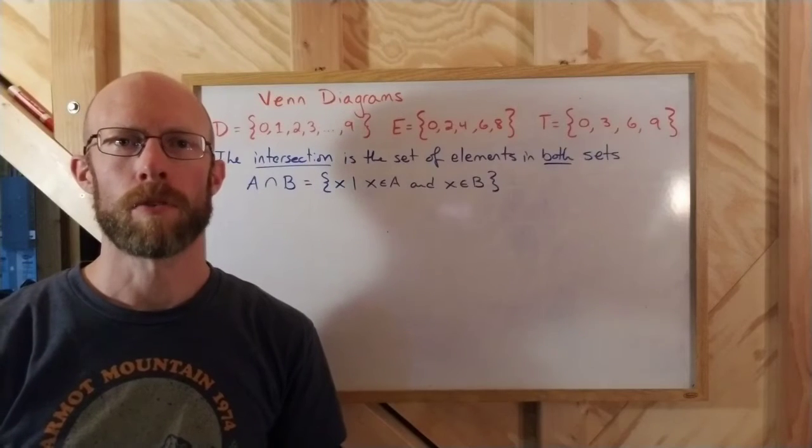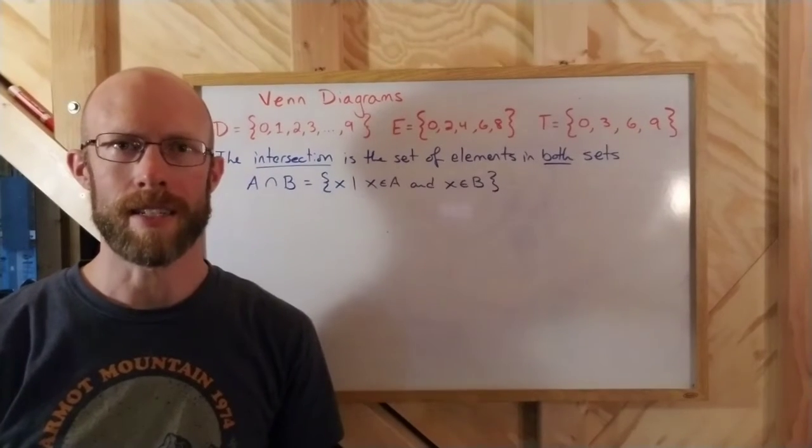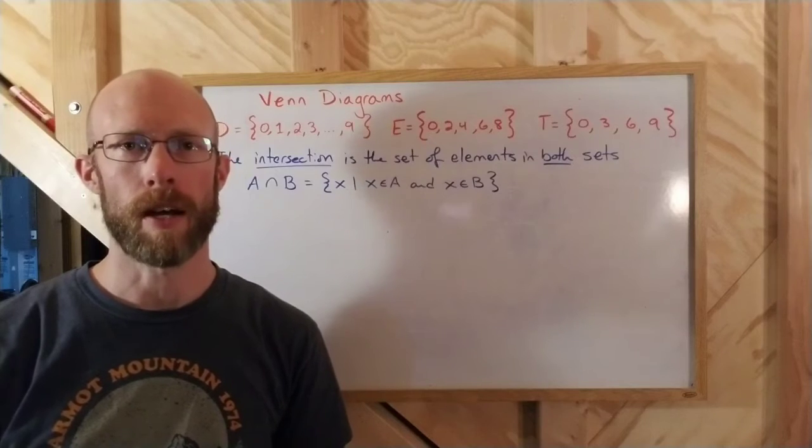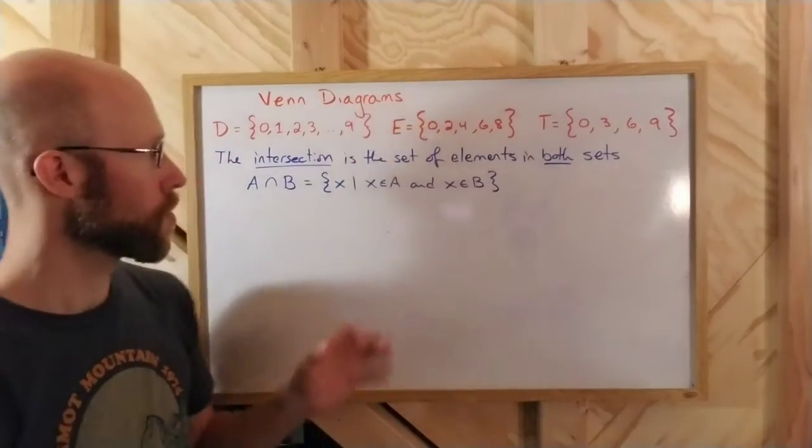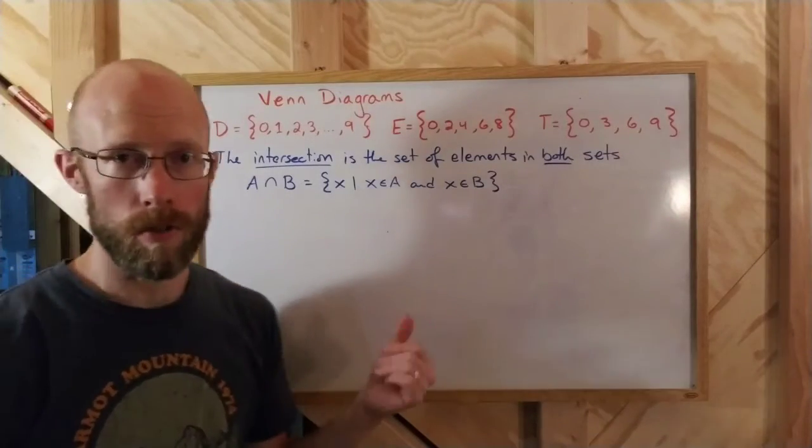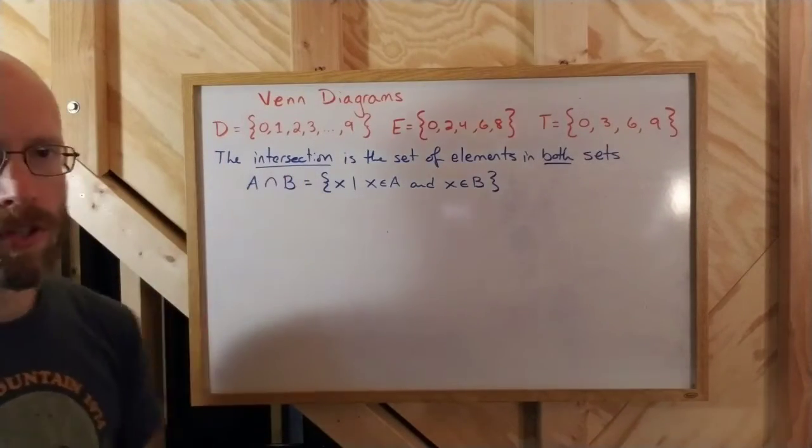And so now I'm going to give some formal definitions to these ideas that I keep talking about, the overlap of sets, things like that. And so the first one is the overlap. It's called the intersection.